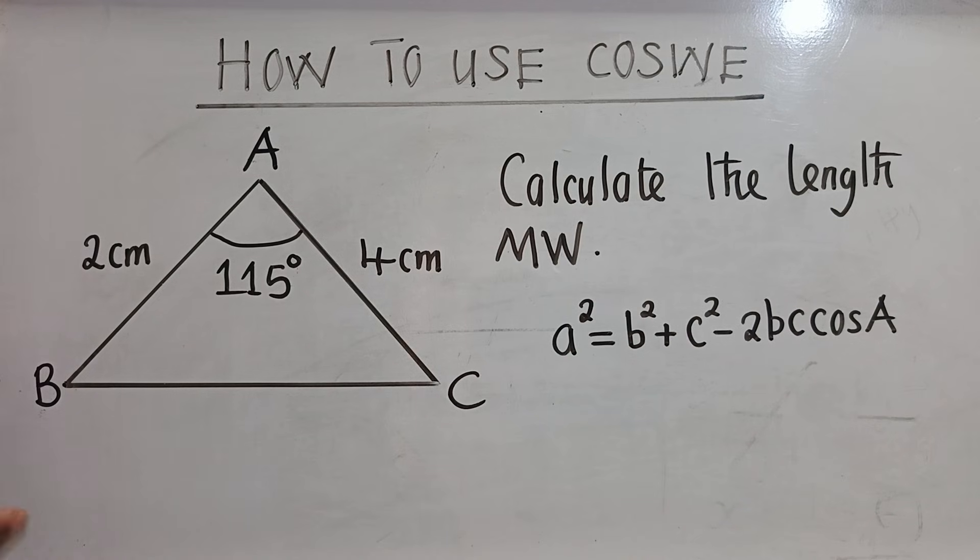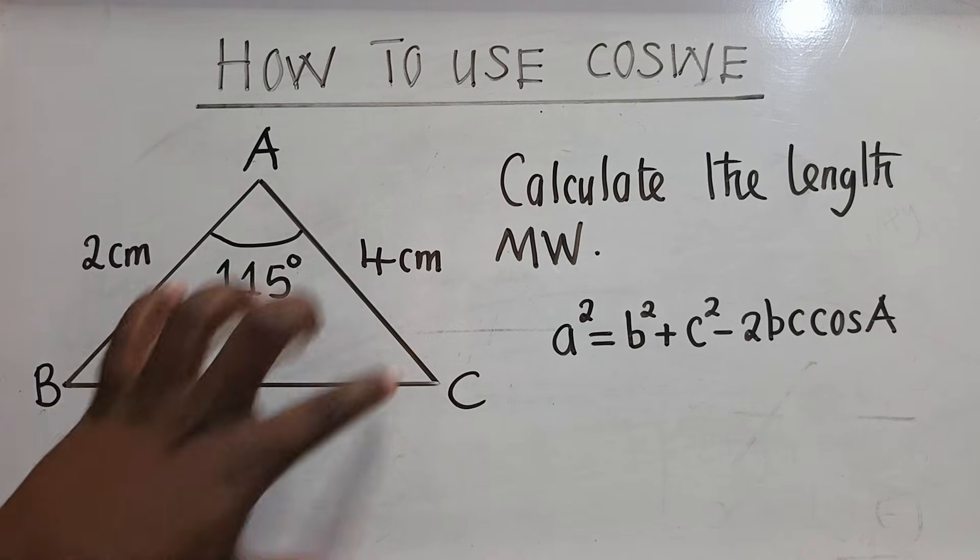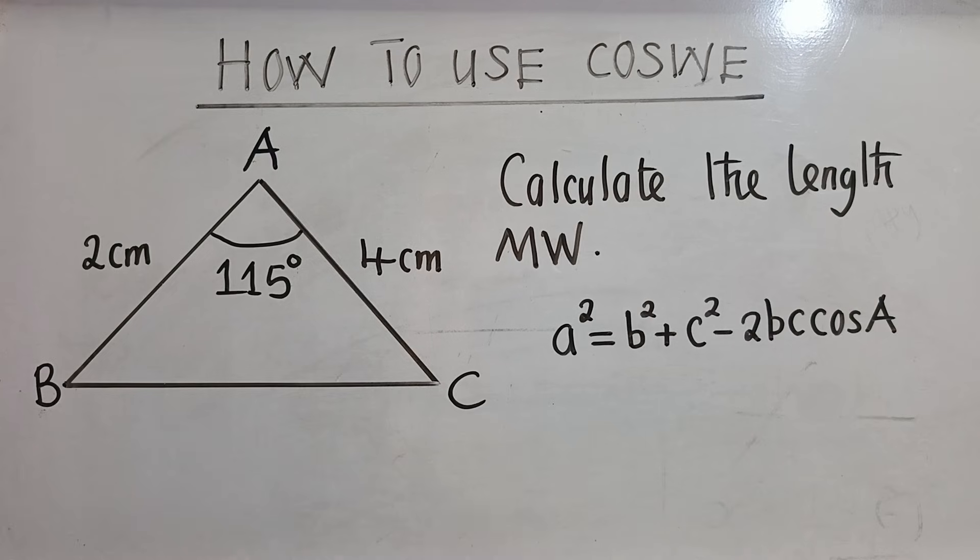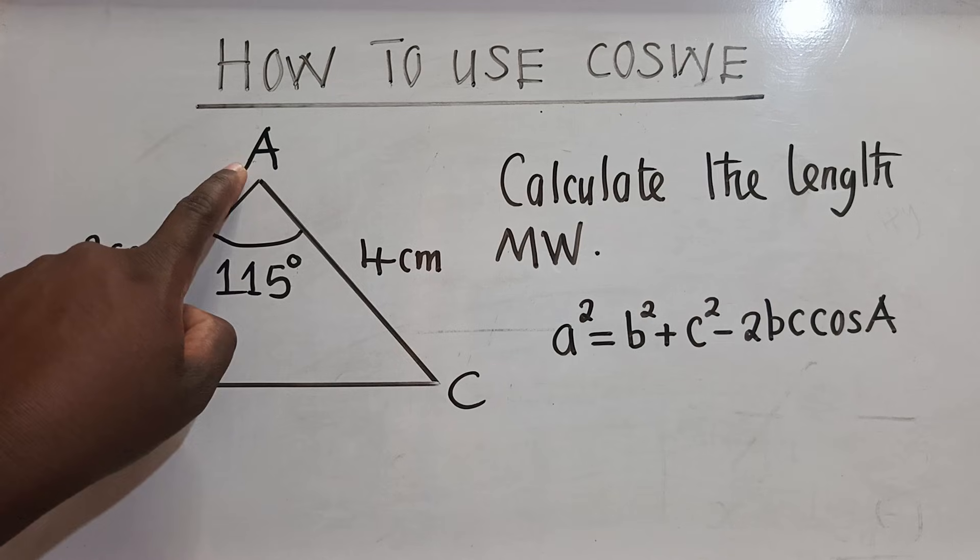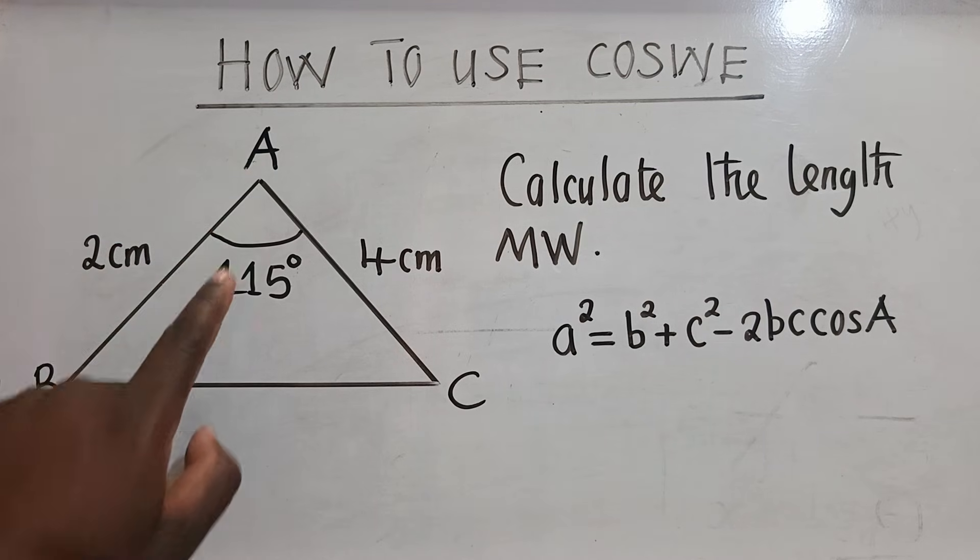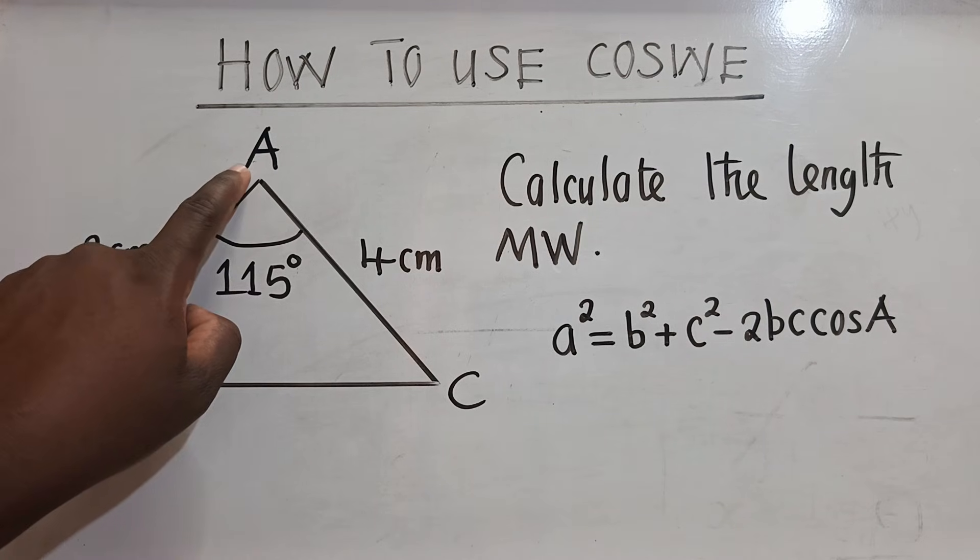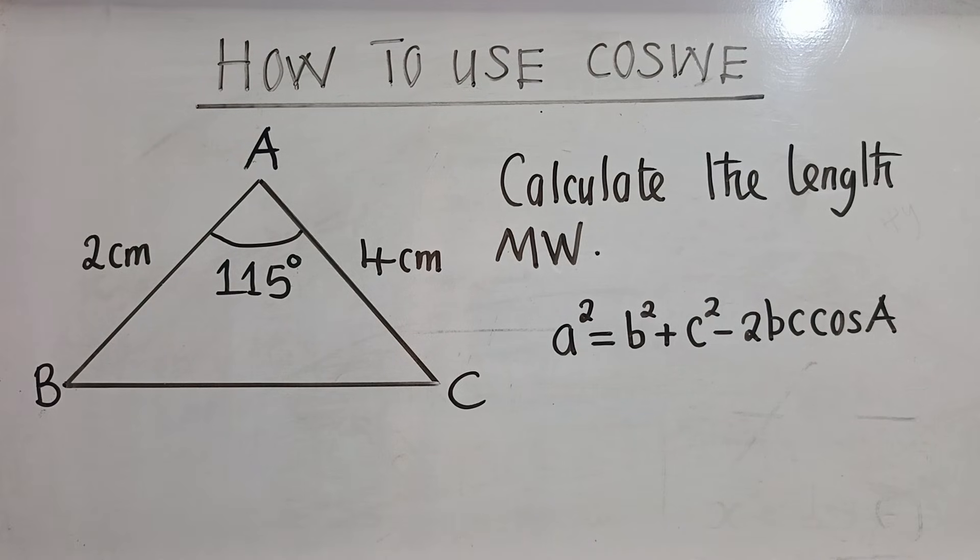So remember this. If you want, you can use the letters which are already given and put them in your formula. But in my video here, I will show you the other way. Use the letters which are in the original formula. Always start with the capital letter of an included angle. You put A there. Since this angle is included, you put capital letter A right here.